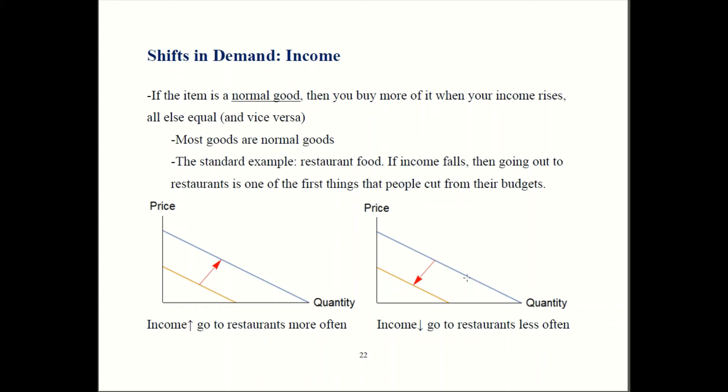When income falls, restaurants are often pretty hard hit. Demand for restaurants is going to drop. You can see that for any price, there's a smaller quantity demanded than there was in the past. So when the price is out here, we used to buy this much, but now we're only going to buy that amount instead.